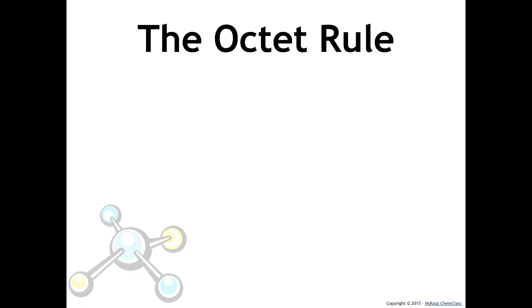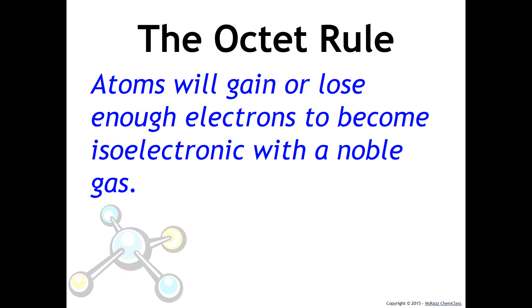One thing that's really important to note is the octet rule. The octet rule says that atoms will gain or lose enough electrons to become isoelectronic with a noble gas. The word isoelectronic just means to have the same number of electrons as a noble gas. Noble gases have a very stable arrangement of electrons. By stable, I mean it's just resistant to change. That's why compounds form, because we want to increase the stability or resistance to change.